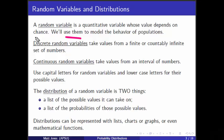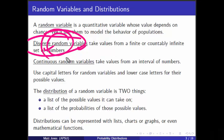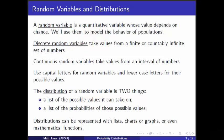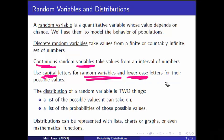We have discrete random variables — we already know what discrete variables are. These take on values from a finite or countably infinite set of numbers. Introducing the word 'random' just means now we have a discrete variable whose value depends on chance. Similarly, we have continuous random variables — continuous variables whose outcomes depend on chance, taking values from a continuum. We usually use capital letters for random variables and lowercase letters for their possible values.